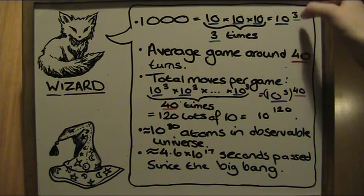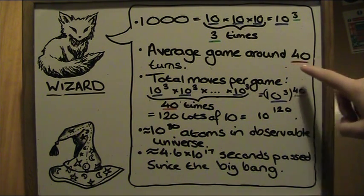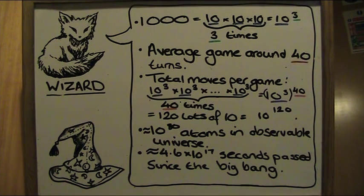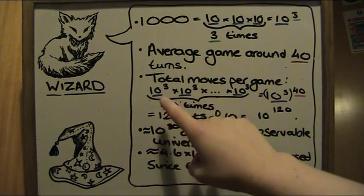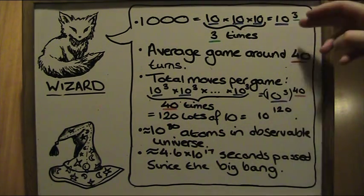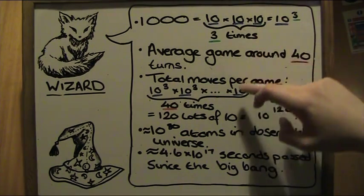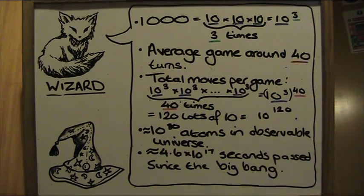To the power is when it's got this small number just above. An average game lasts around forty turns. So to calculate the total moves per game, we have to calculate the number of moves per turn for these forty turns. So we write out ten cubed forty times. And notice that we've got a number multiplied by itself so many times. Here it is forty.